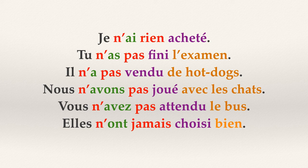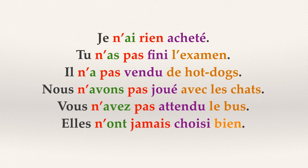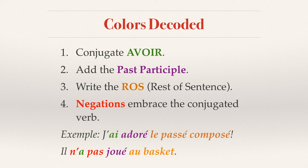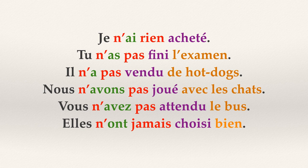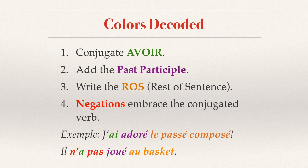These are some examples, and notice I added another color to our conjugation — red for negations. So these are our colors decoded: red for negation embracing the green form of avoir, then purple for our past participle, and orange for the RAS — the rest of the sentence. For example: j'ai adoré le passé composé; il n'a pas joué au basket — he didn't play basketball.